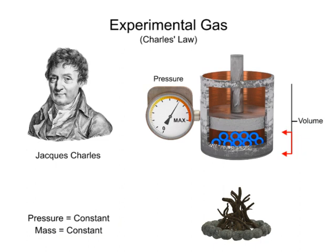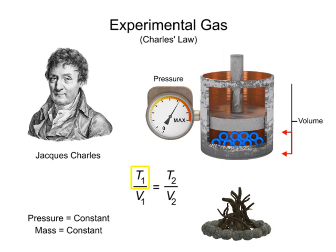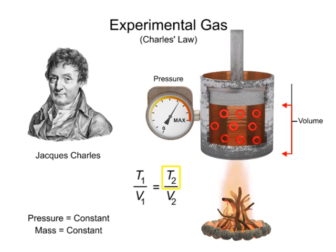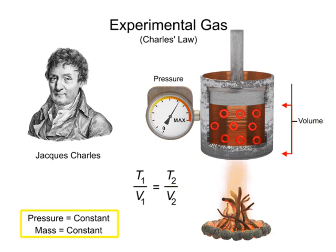Charles' Law can be expressed mathematically as the ratio of the temperature at state 1 to the volume at state 1 is equal to the ratio of the temperature at state 2 to the volume at state 2. This law is true as long as the pressure and mass remain constant.